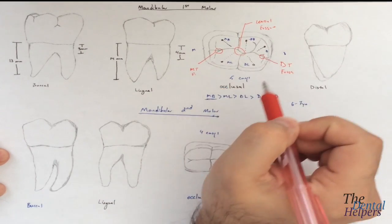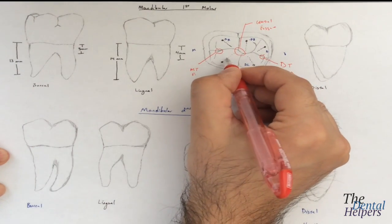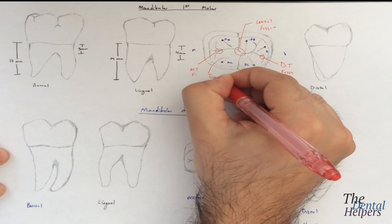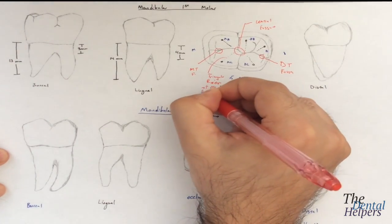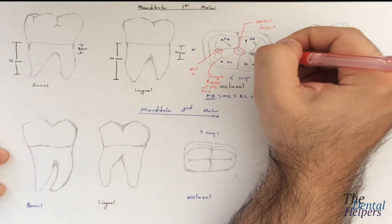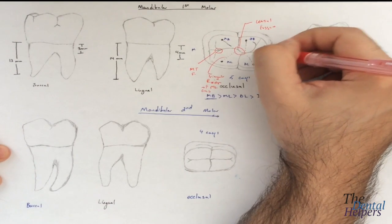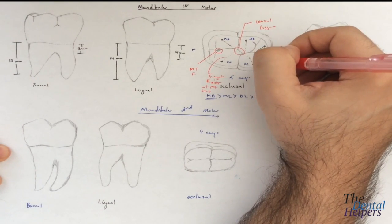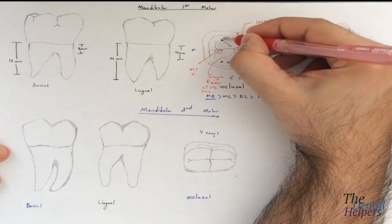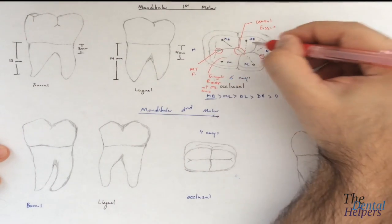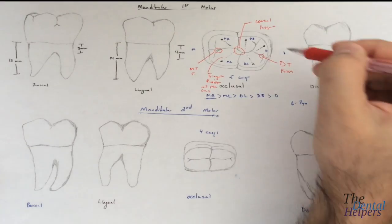Where these dots are is actually where the cusps are, and these dotted lines correlate to the triangular ridges of the cusp. This is the triangular ridge of the mesial lingual cusp. Same thing — this would be the triangular ridge of the mesial buccal cusp, the triangular ridge of the distal buccal cusp, the triangular ridge of the distal cusp, and the triangular ridge of the distal lingual cusp. Right here we're going to have a transverse ridge that's going to cross over, and two triangular ridges are going to make a transverse ridge.